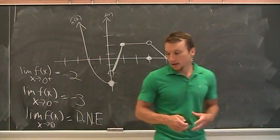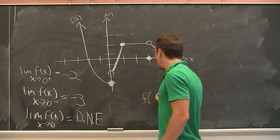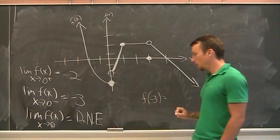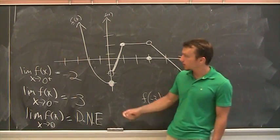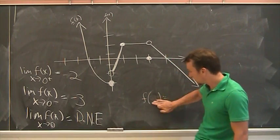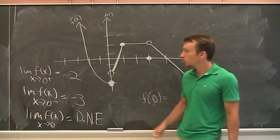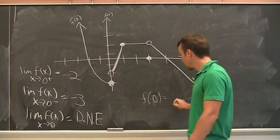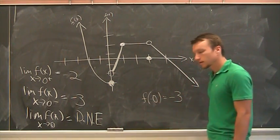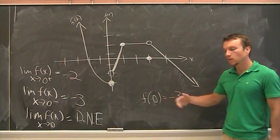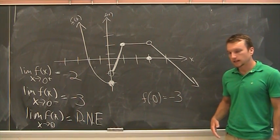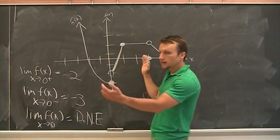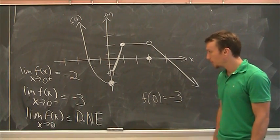Another note: what is the actual value there? What is f(0)? If I plug in 0 to this function, the output — because it's a filled-in circle — gives me negative 3. That's another way to explain why the limit does not exist: this output would have to be the same as both one-sided limits, or the limits would have to match up.